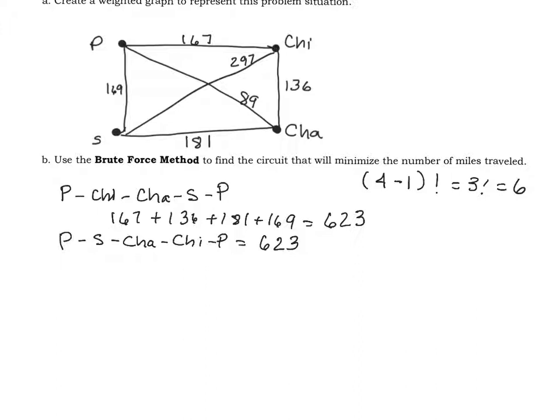Look at another possibility. Instead of going Peoria, Chicago, Champaign, maybe we could go Peoria, Champaign, and then Chicago, St. Louis, and then back to Peoria. That will be 89 plus 136 plus 297 plus 169, and that will be 691 miles.